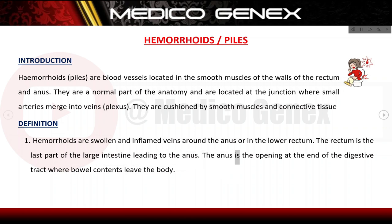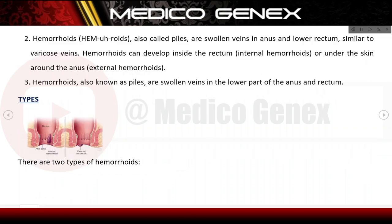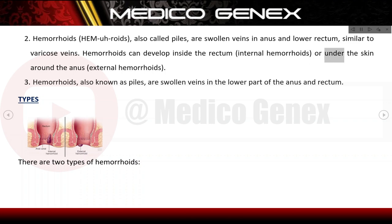The rectum is the last part of the large intestine leading to the anus. The anus is the opening at the end of the digestive tract where bowel contents leave the body. Haemorrhoids, also called piles, are swollen veins in the anus and lower rectum, similar to varicose veins. They can develop inside the rectum as internal haemorrhoids, or under the skin around the anus as external haemorrhoids.